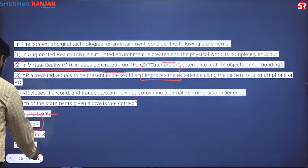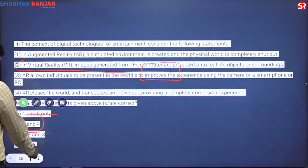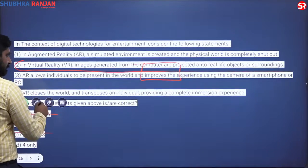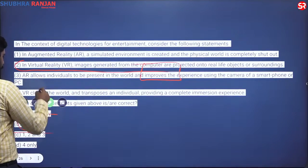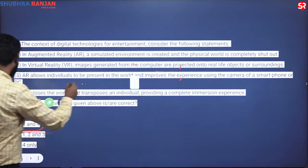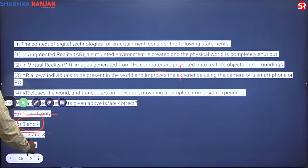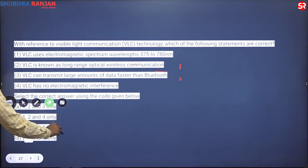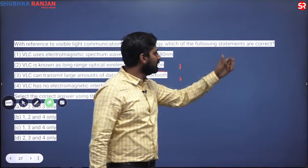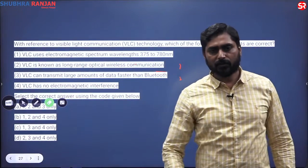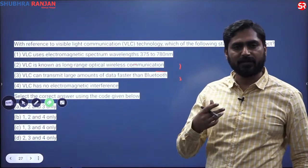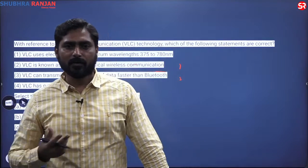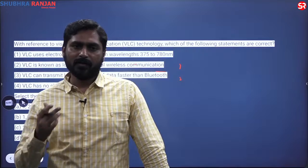This is how you should use both your knowledge and the elimination technique together. Let us take a question on VLC — visible light communication technology. Telecommunication is mostly based on radio frequency: 1G, 2G, 3G, 4G, 5G are all based on radio frequency. When we say visible light communication, we use light as a medium to send data or information.